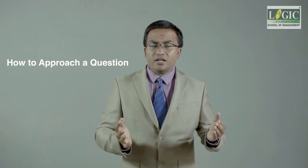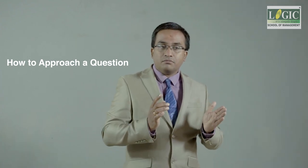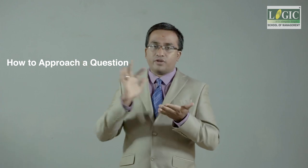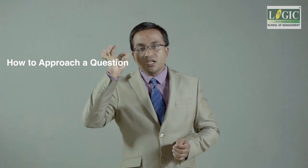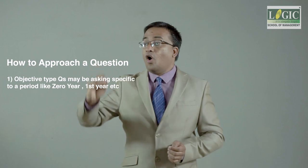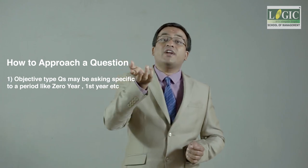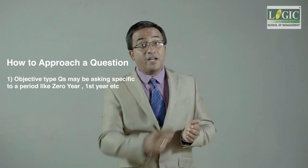When approaching capital budgeting questions in the CMA exam, there are two types. Descriptive questions may ask you to evaluate the entire life cycle using all of ZDRS. Objective questions typically ask for the cash flow of a specific period — for example, year zero, year one, or the end of the project. Covering the complete NPV exercise is too lengthy for objective questions.